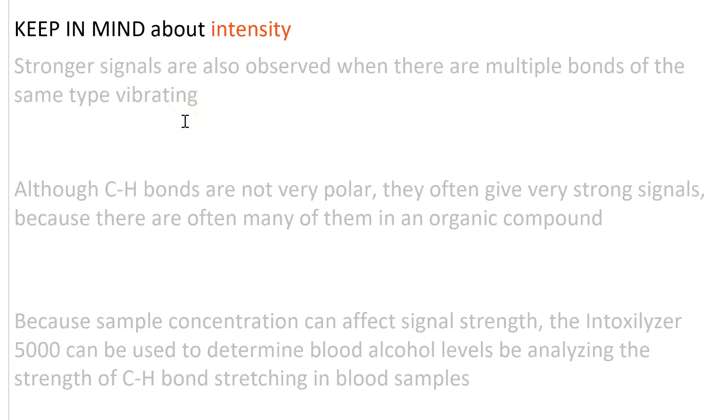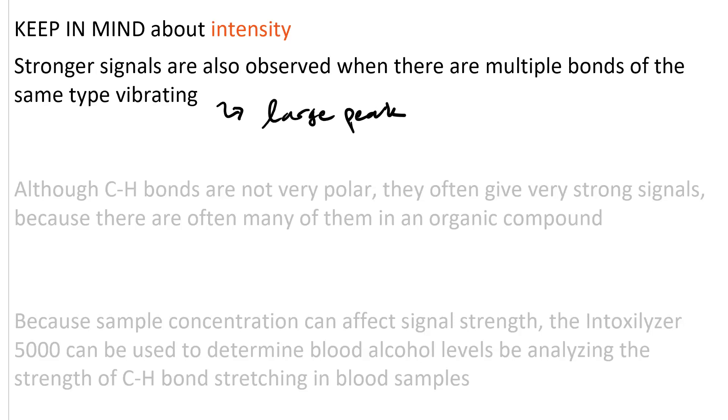Some other factors to keep in mind about IR intensity. Very often you'll see strong signals when there are multiple bonds of the same type. An example of this is you'll almost always in an alkane see a large peak around 3000 wavenumbers, and that's from multiple SP3 hybridized CH stretches superimposed.